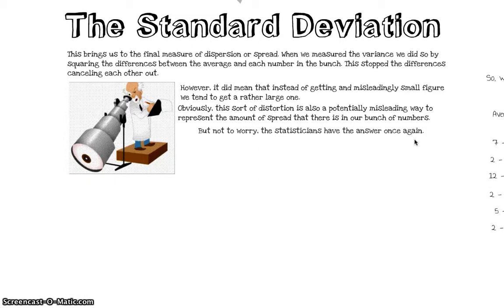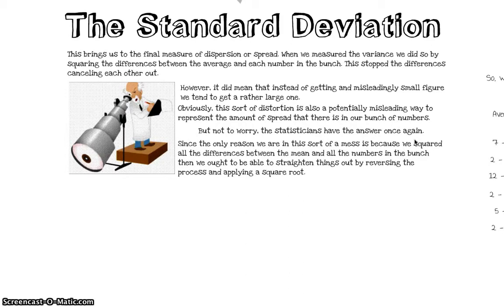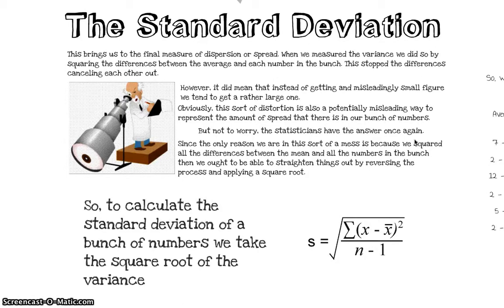So obviously this sort of distortion is also probably going to be a bit misleading. It's not a very good description of the data. But not to worry - the statisticians have the answer once again. Now the only reason we're in the mess that we're in is because we squared all the differences. So they argue, if you want to straighten things out, you could do so by just square rooting the answer in the end. So to calculate the standard deviation of a bunch of numbers, we take the difference between each item in the set and its average, and we square it, and then we add them all up - that's what that sigma means. And then we divide it by n minus 1 - n is the number of items in the data set, and n minus 1 is a statistical correction.